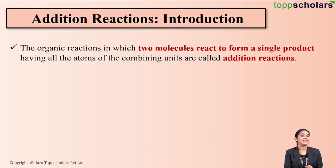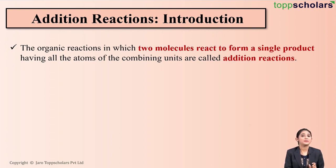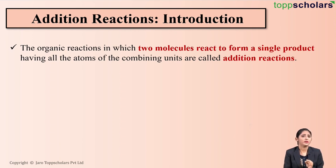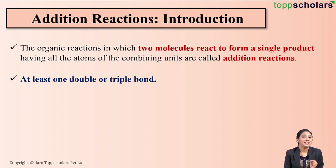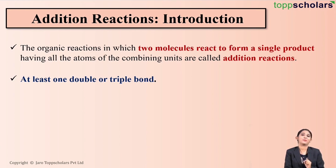An addition reaction is a reaction wherein two molecules react to give you a single product, and this product contains all the atoms of the reactants. Now, there is a very important condition for addition reactions to occur: the reactant should have at least one double bond or one triple bond, which means that the reactant should be an unsaturated compound. Unsaturated compounds are compounds which contain at least one double or one triple bond.